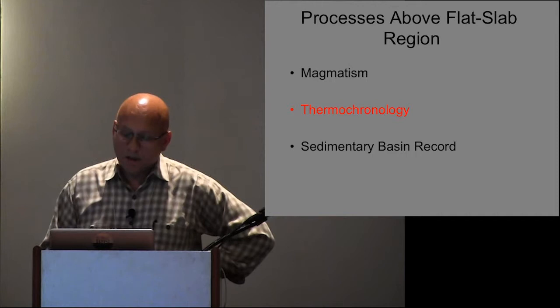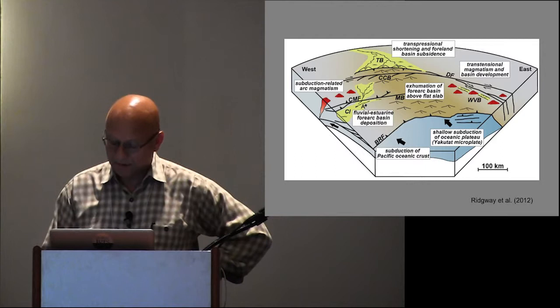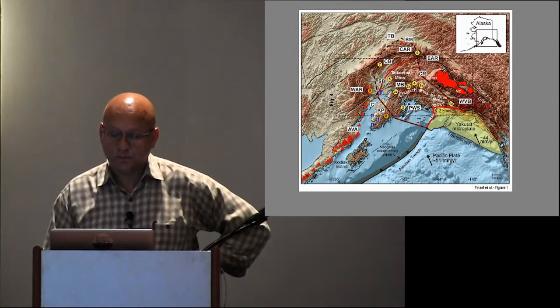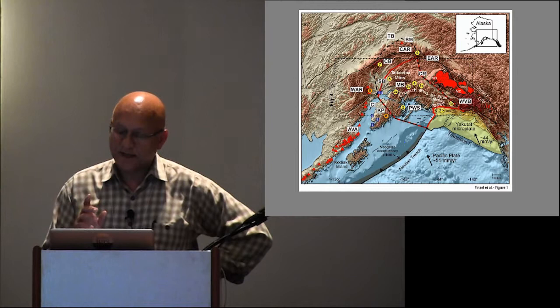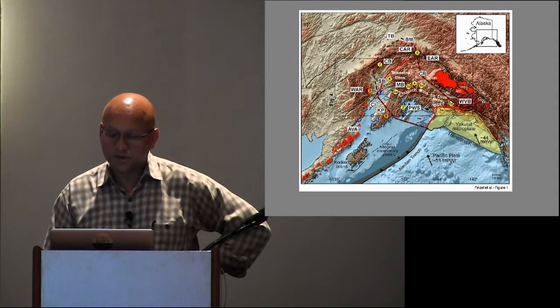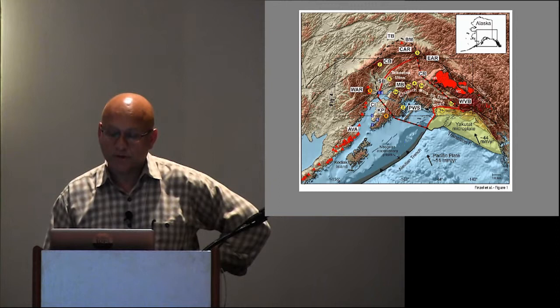Now thermochronology. The question here is when did this area of flat slab subduction start to be exhumed? There's been a number of studies working on this issue. There's a new one that just came out in 2013, Phil Armstrong's student from the Chugach. We don't have time to go through all this data. I'm going to show you data from the STEEP project, which a number of people in here worked on. I'm going to show you this area 1B and 1A here. 1B is this young fold and thrust belt in the subduction zone, and 1A is the backstop.